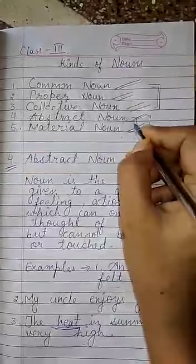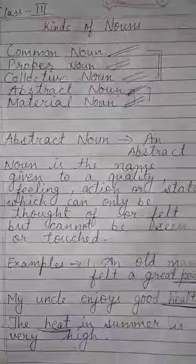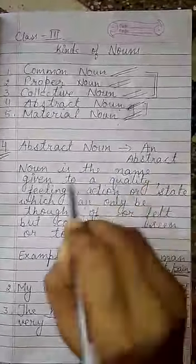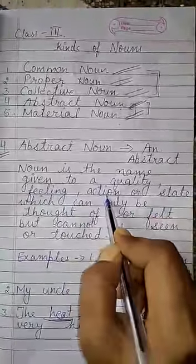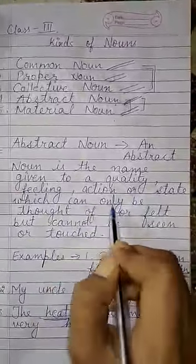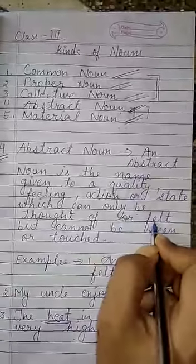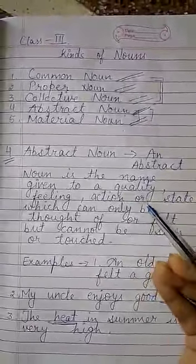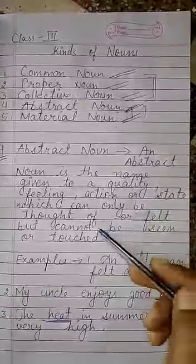Today we will start with abstract noun. What is an abstract noun? An abstract noun is the name given to a quality, feeling, action, or state which can only be thought of or felt, but cannot be seen or touched.